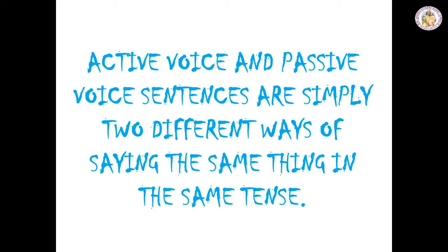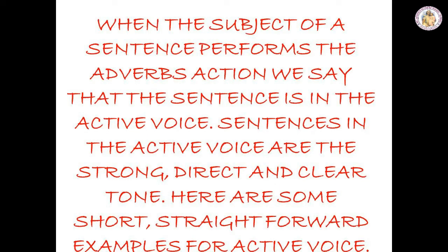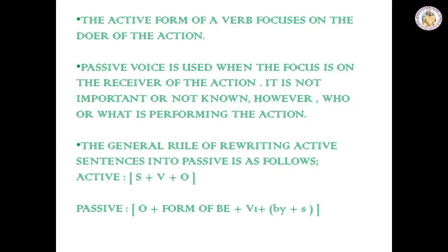Actually children, active voice and passive voice sentences are simply two different ways of saying the same thing in the same tense. When the subject of a sentence performs the verb's action, we say that the sentence is in the active voice. Sentences in the active voice have a strong, direct and clear tone. A sentence is in the passive voice, on the other hand, when the subject is acted on by the verb. The passive voice is always constructed with a conjugated form of 'to be' plus the verb's past participle.